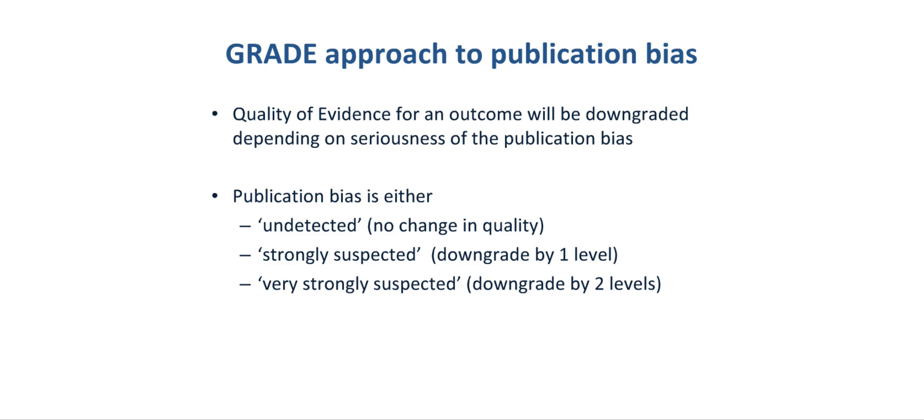In the GRADE approach to assessing publication bias, the quality of a body of evidence for an outcome will be downgraded depending on the extent of the publication bias. Publication bias is either undetected or strongly suspected, which would lead to downgrading by one level. In very rare circumstances, one might downgrade by two levels.